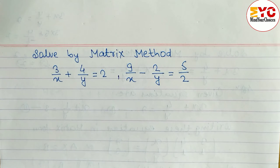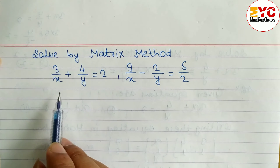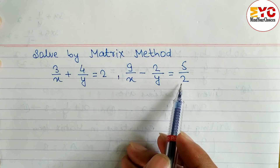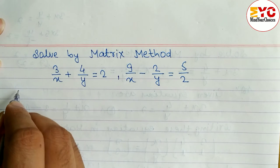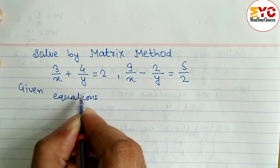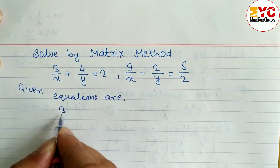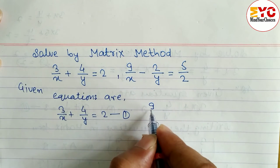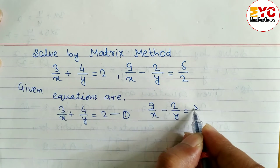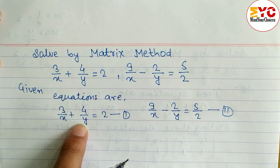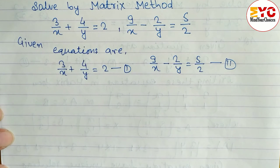In this video we are going to learn how to solve equations using the matrix method. We have two equations: 3/x plus 4/y equals 2, and 9/x minus 2/y equals 5/2. You can see that x and y are in the denominator. If the variable is in the denominator, no need to take the LCM — we only take LCM when it is a number. After this, we have to write in matrix form.